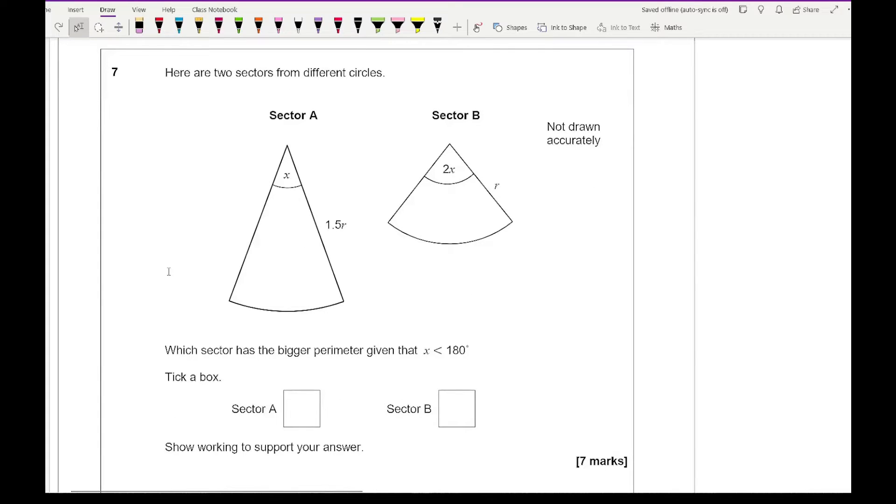Now moving on to question 7, it says here are two sectors from different circles. Which sector has a bigger perimeter given that x is less than 180? It says tick a box, sector A or B, and it's a massive 7 mark question.